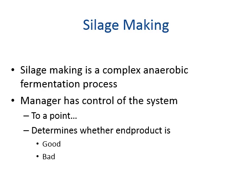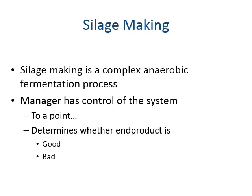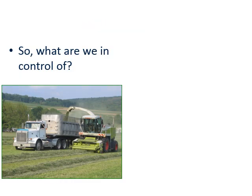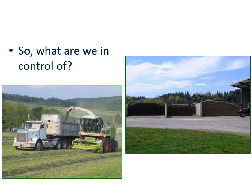Silage making is a complex anaerobic fermentation process. We can control some things, and what we do from a management standpoint determines what's good or bad. We're in control of choosing the harvest date, making sure our moistures are correct, getting things into the silo quickly, getting them packed completely, and covered quickly. The better we do those things, the better silage we have.